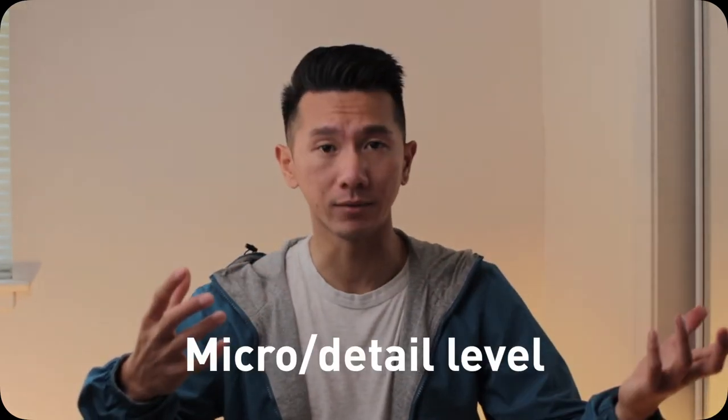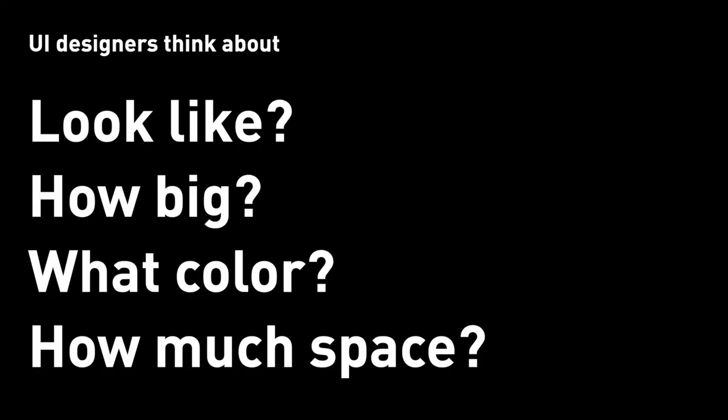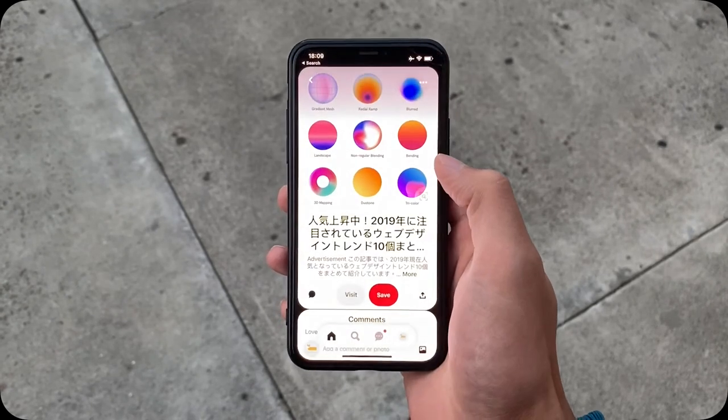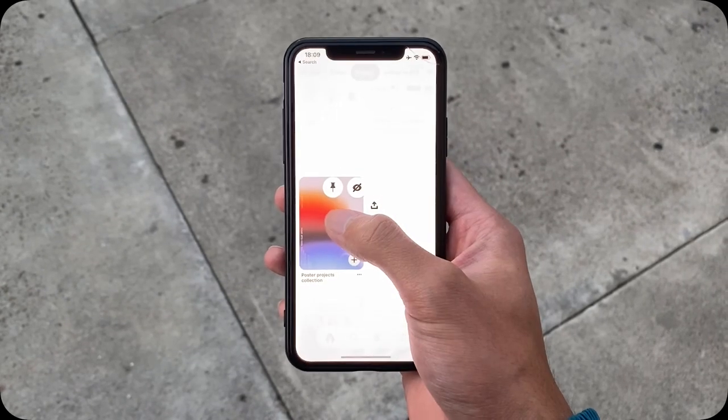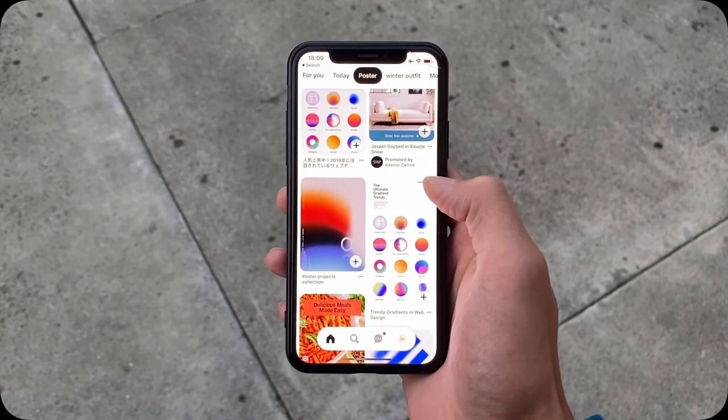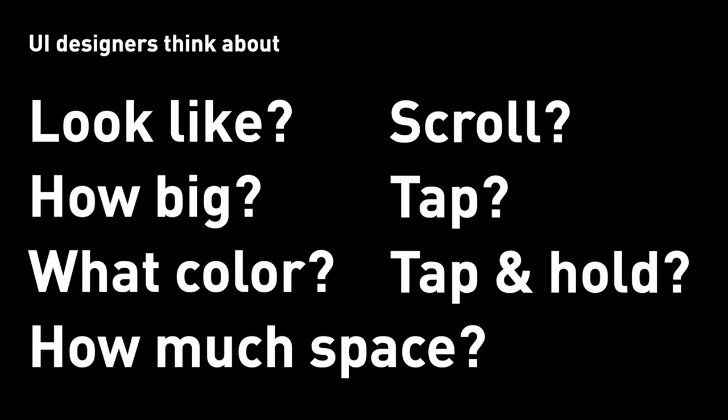Therefore, UI design defines the interaction layer that you and I will interact with directly, digitally or tangibly. It deals with things at a more detail level. As a UI designer, you're going to think about what do those UI elements look like, how big are the buttons, what color are they, how much spacing do you put between them, how do users interact with those elements — for digital interfaces, is there a scroll, is it a tap, is it a tap and hold? These are highly visible things. You will see them. UI is visual.